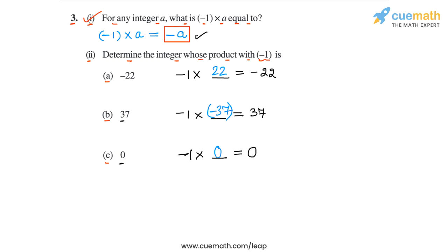So the answers for part 2 are 22, -37, and 0. So this completes part 2, and with this we have completed question number 3.